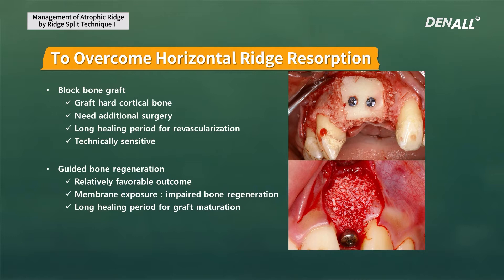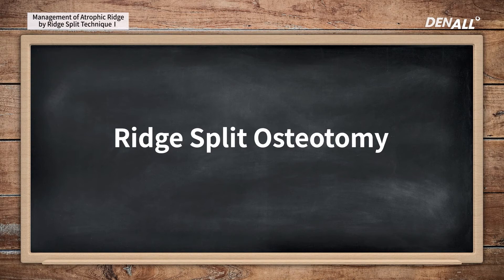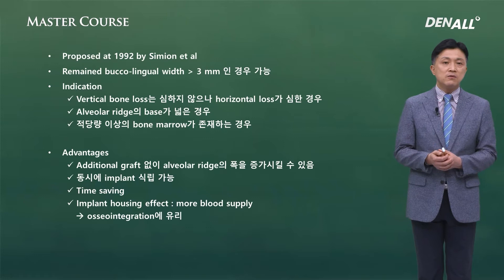However, additional incision or releasing may be necessary with GBR. The downside is that once the membrane is exposed, the regeneration effect is dampened. It also takes a long period of time for the graft material to mature. In certain cases, we can do ridge split osteotomy, which was first introduced by Simeon in 1992.